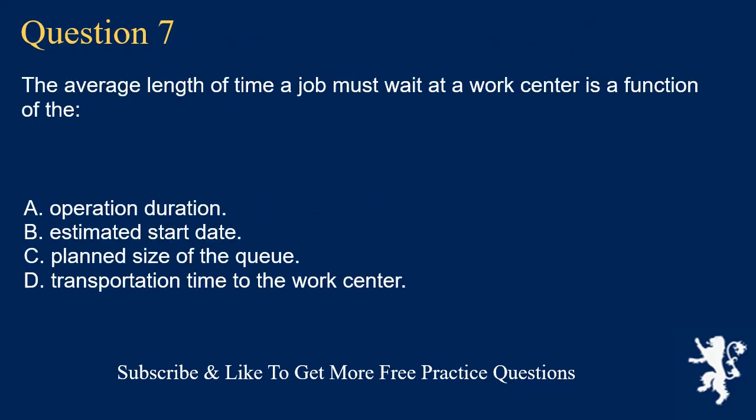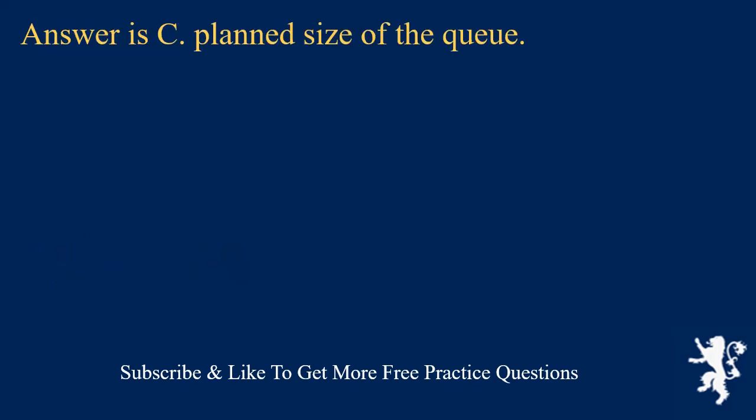Question 7. The average length of time a job must wait at a work center is a function of the: A. Operation duration. B. Estimated start date. C. Plan size of the queue. D. Transportation time to the work center. Answer is C. Plan size of the queue.